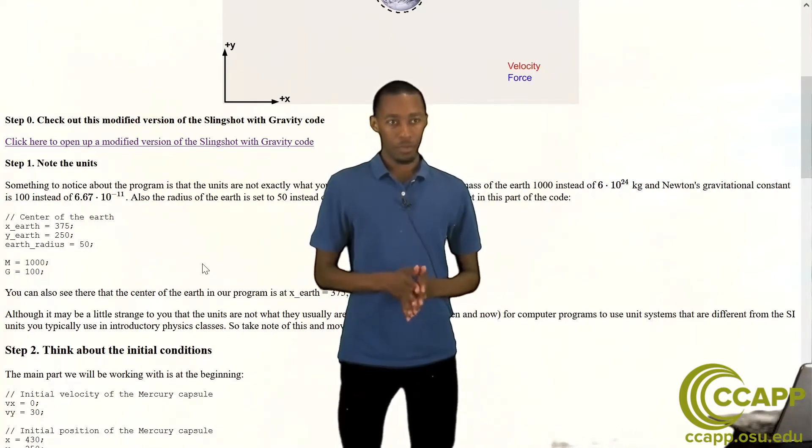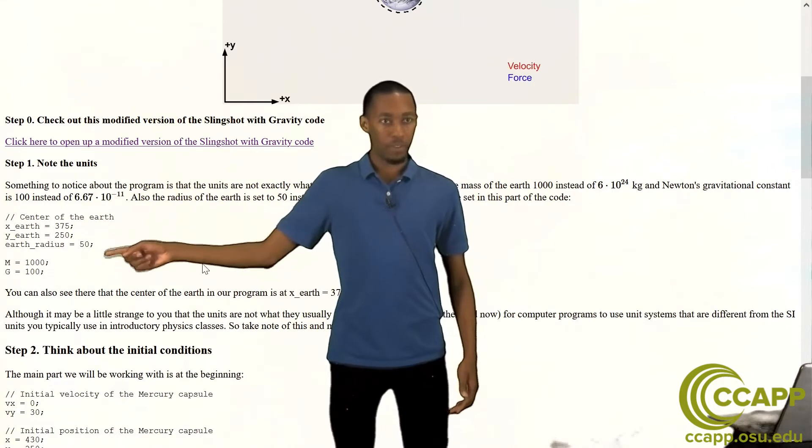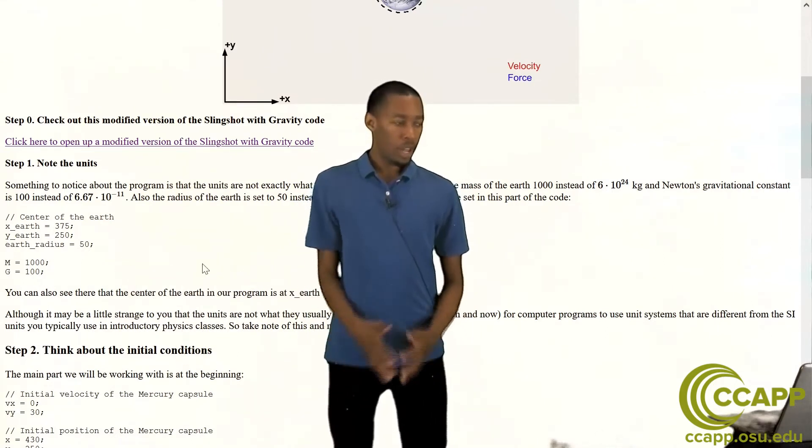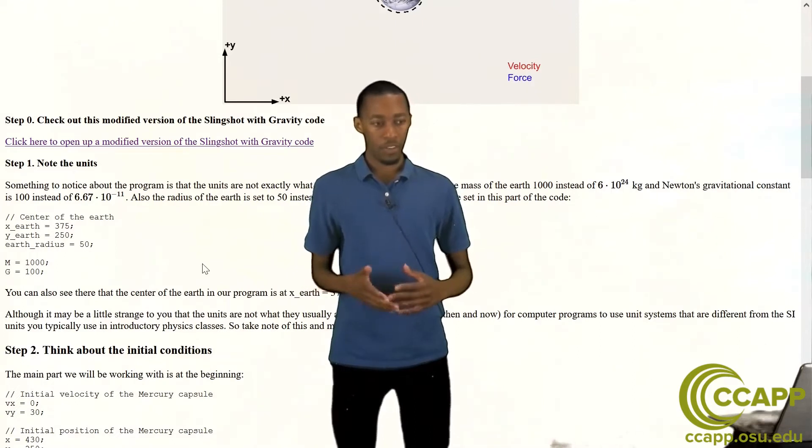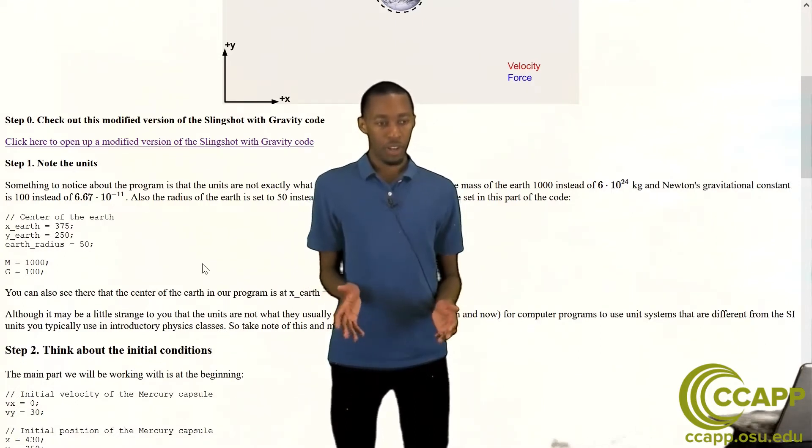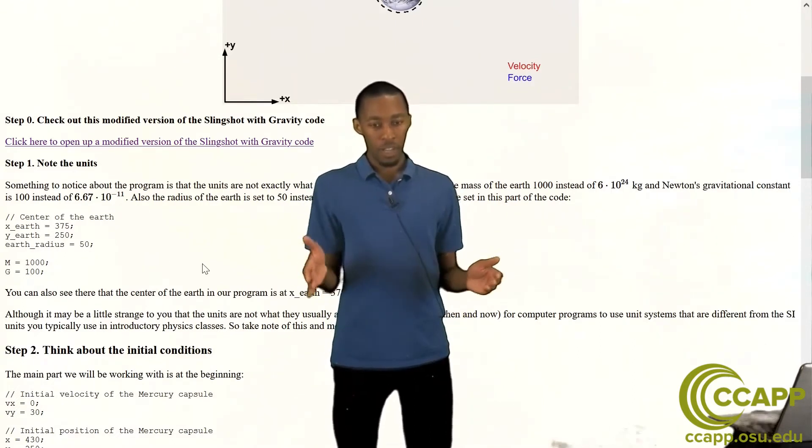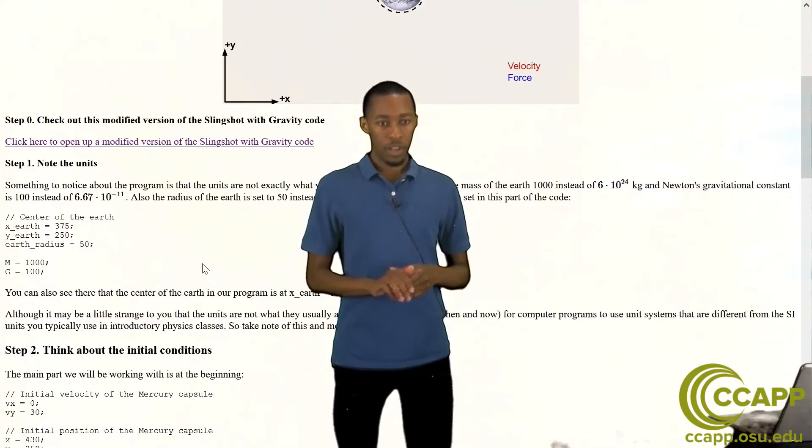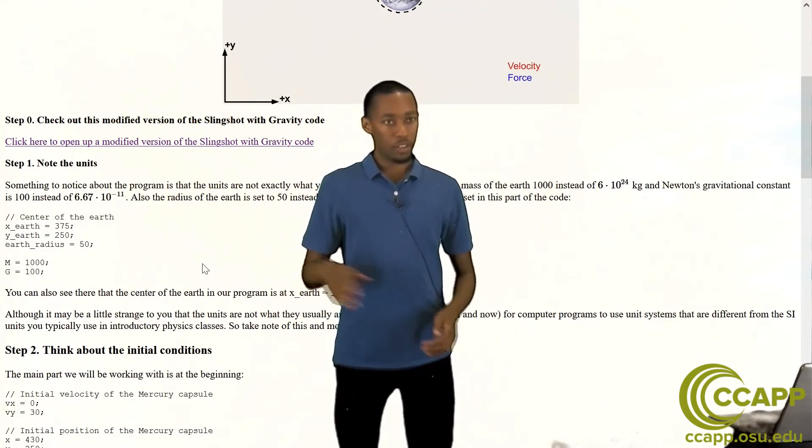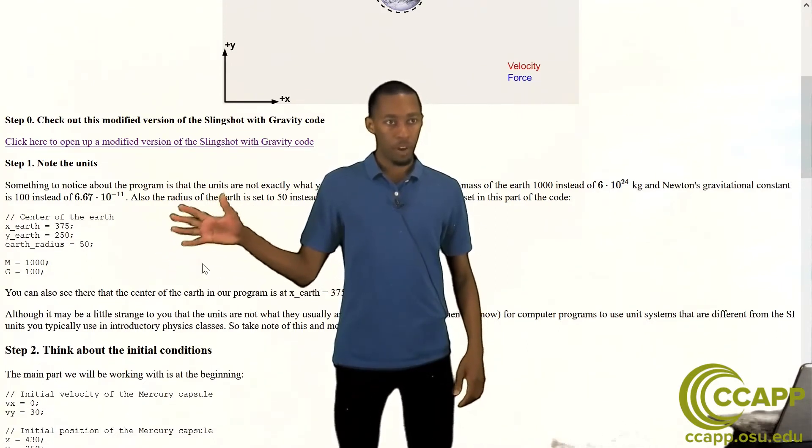Now those of you who have done introductory physics might think that this is kind of awkward. Nowhere in any textbook will you see a value for m that's 1000 and a value for g that's 100. But this is something that we do for the purposes of making the code function on the timescale of a video. If I actually wanted to use true values for say the mass of the earth and Newton's constant it would not be able to display nearly as well on a computer screen as we can get it to work here. So these are just some toy numbers but they work well for our purposes.